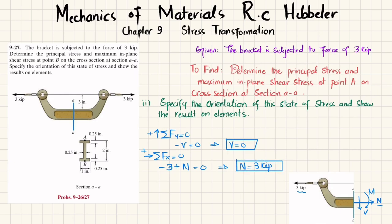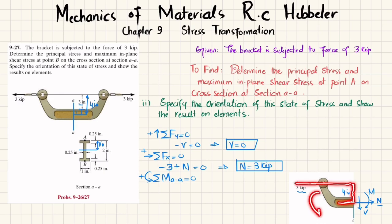Now we find the moment about section A-A. The sum of all moments about section A-A must equal zero, with counterclockwise taken as positive. The total distance from the force to the mid of this section is 4 inches: the dimension shown is 3 inches, plus 1 inch which is half the cross-section width. So the force of 3 kips acts at a perpendicular distance of 4 inches about section A-A.